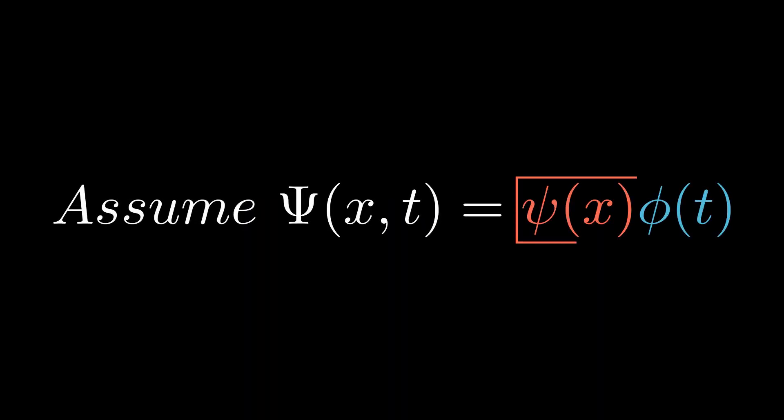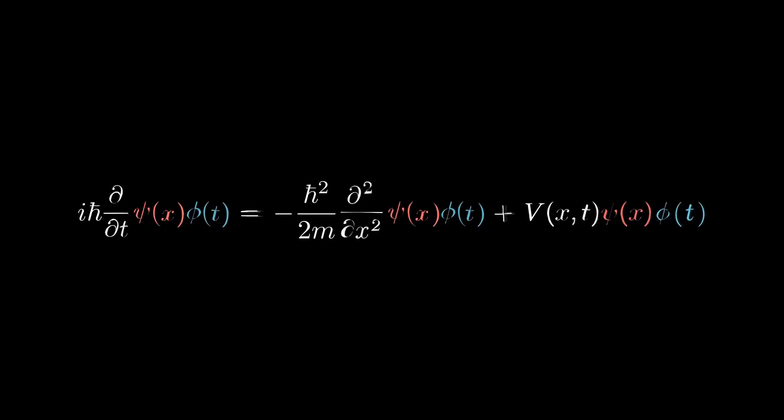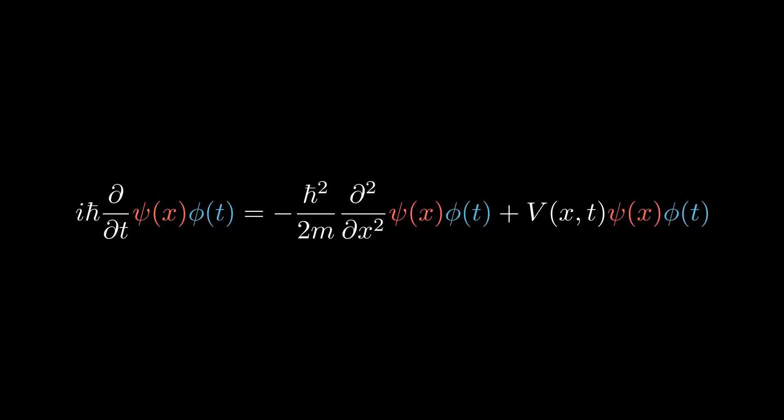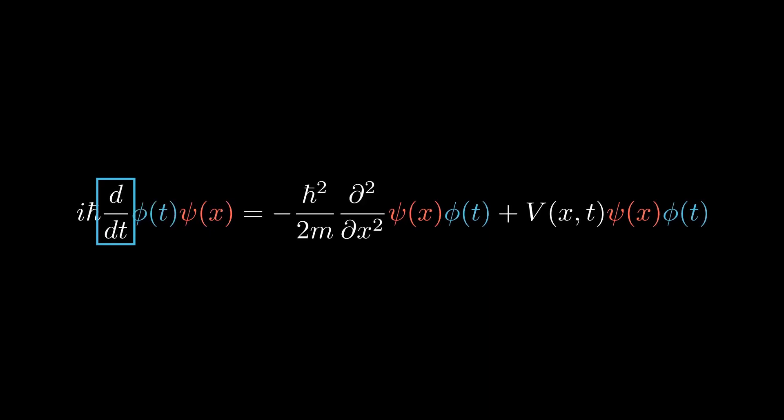Introduce the technique known as separation of variables. The method involves an initial assumption that the solution to the Schrödinger equation be a function that is decomposed into the product of spatial and temporal functions. When we plug our ansatz into the Schrödinger's equation, partial differentials on each side of the equation become total differentials, which is the first simplification.